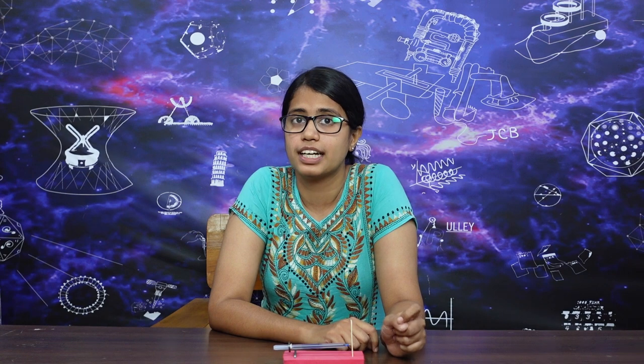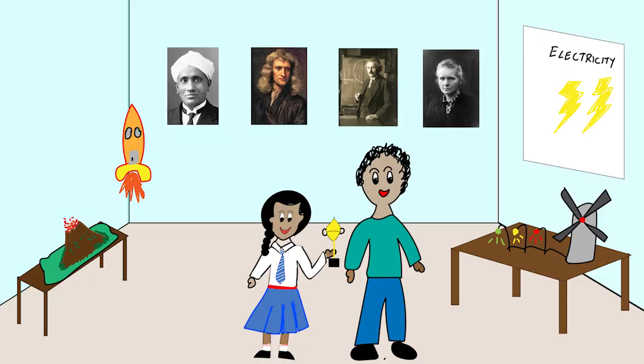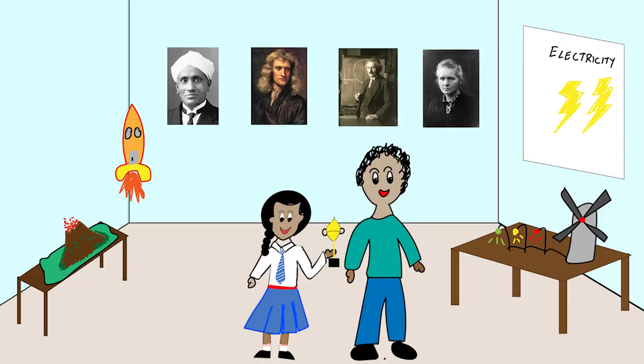Using this pen to explain physics, a school kid got second prize in Intel's International Science Competition. And with this achievement, a minor planet was named after them. So there's a minor planet in the sky named Hamsa.